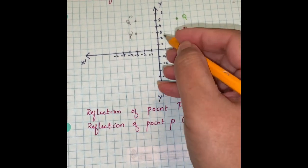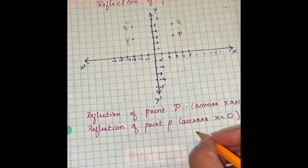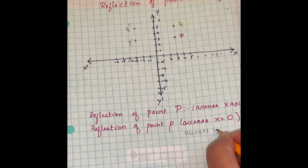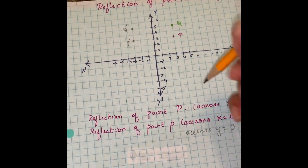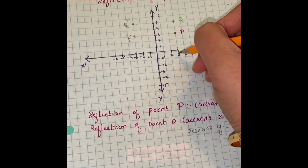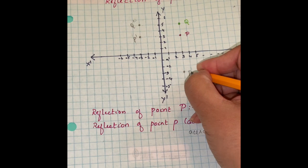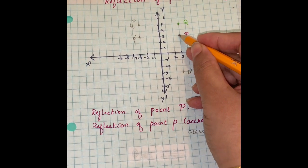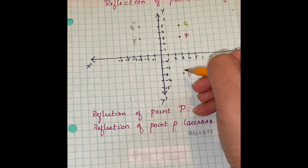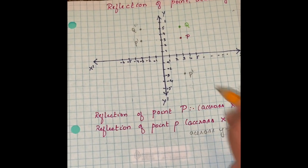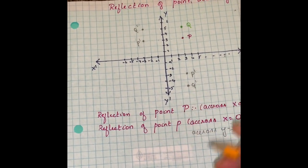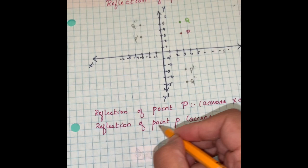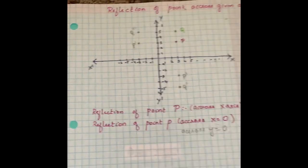If the given equation is y equals 0, then the baseline is the x-axis. Count the units from the point down to the x-axis and the same number of units below to find the reflection. This gives the reflection across y equals 0, that is the x-axis, for both point P and point Q.